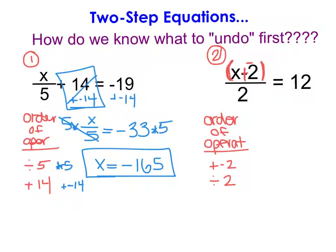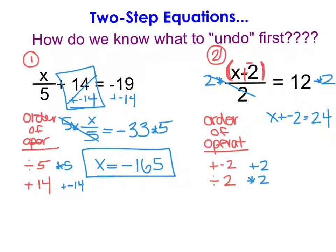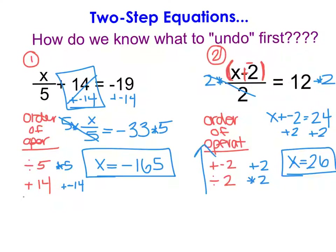I'm going to undo those order of operations backwards. So I start by undoing the division, multiplying both sides of the equation by 2. That leaves x + (−2) = 24. I then undo the addition of negative 2 by adding 2 to each side, giving x = 26. Remember, this stems from the idea that we are undoing the order of operations backwards to solve for the missing variable value.